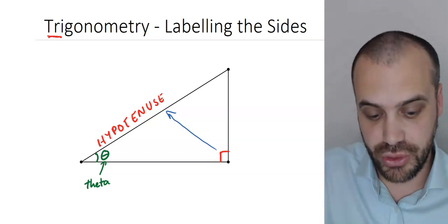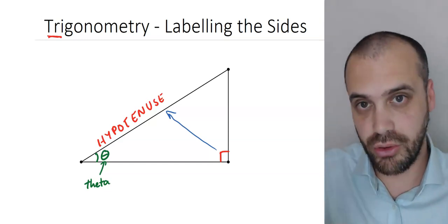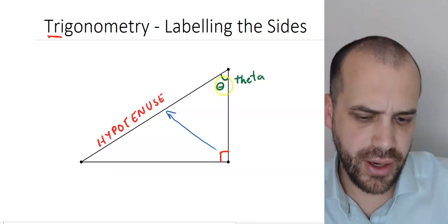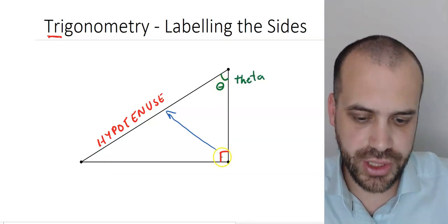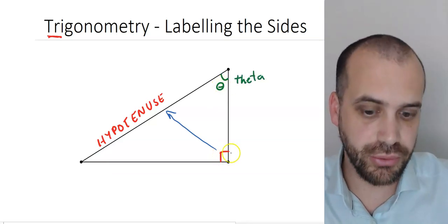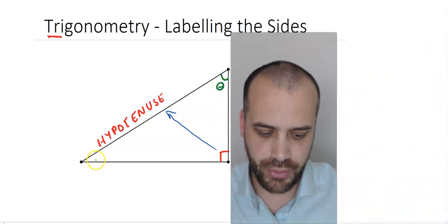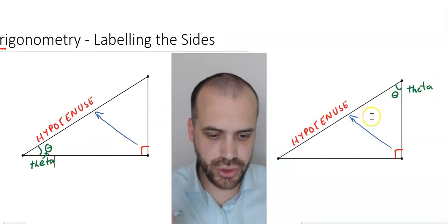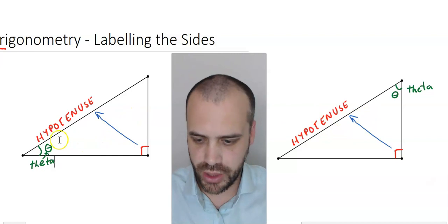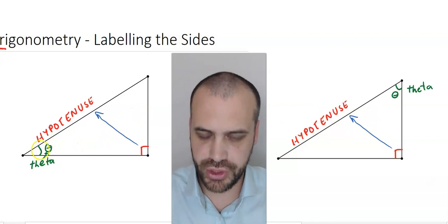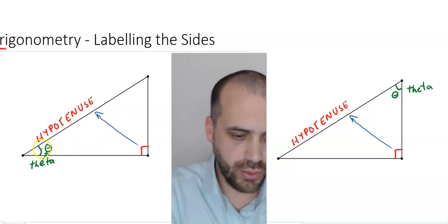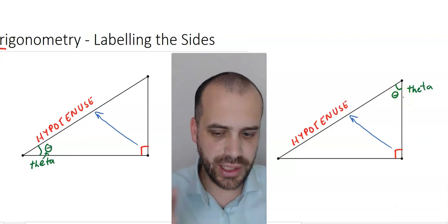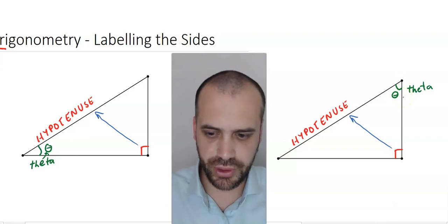Our angle of interest could be here or over here — but it can never be the right angle; it's either this one or that one. We're looking at two identical triangles: one with the angle of interest on one side and one with it on the other, and you'll see how we label these differently.